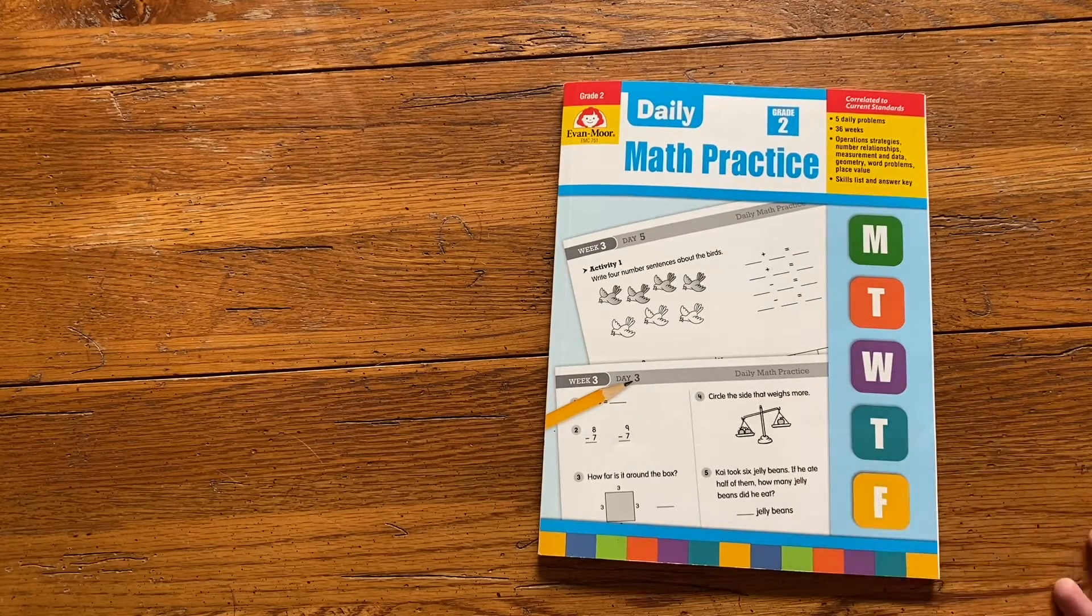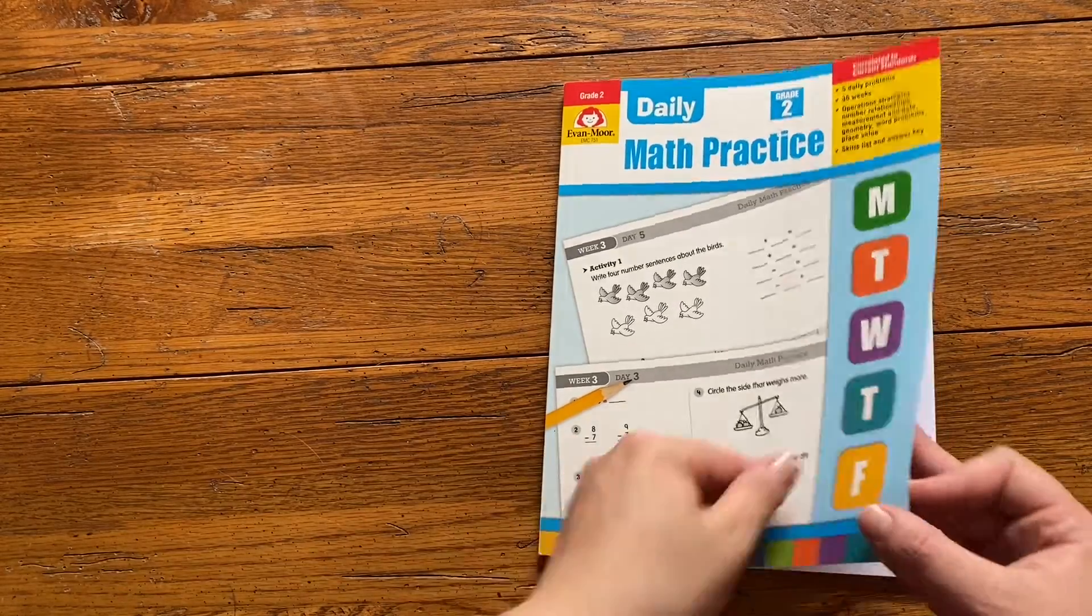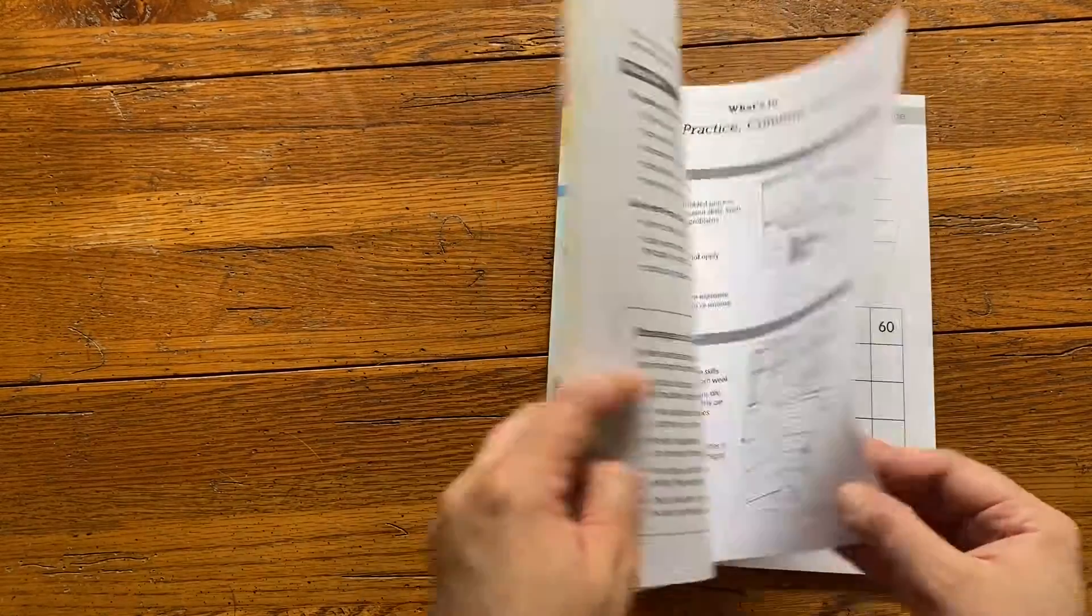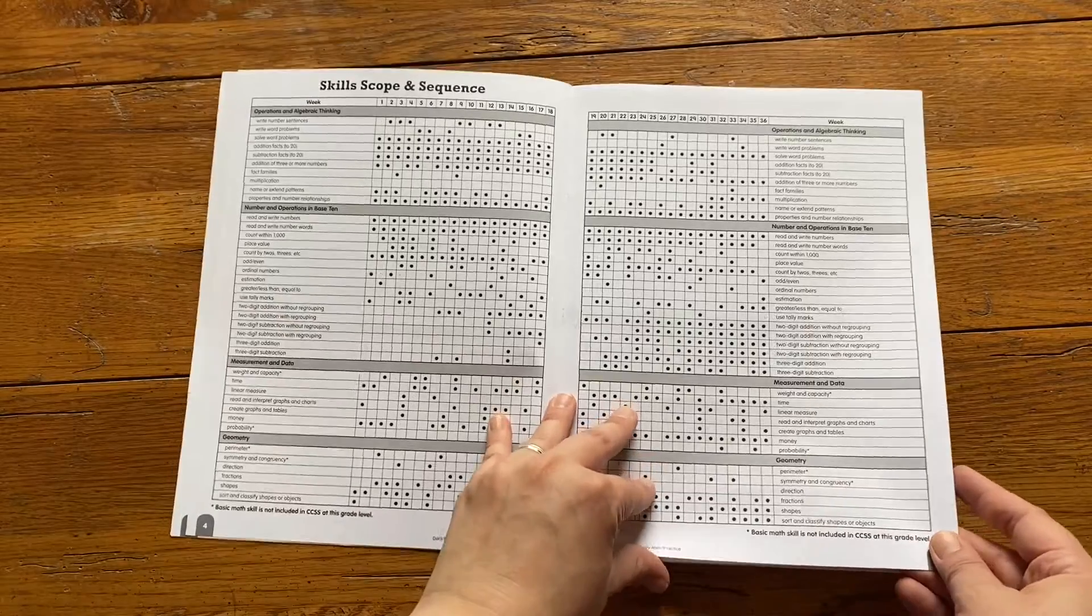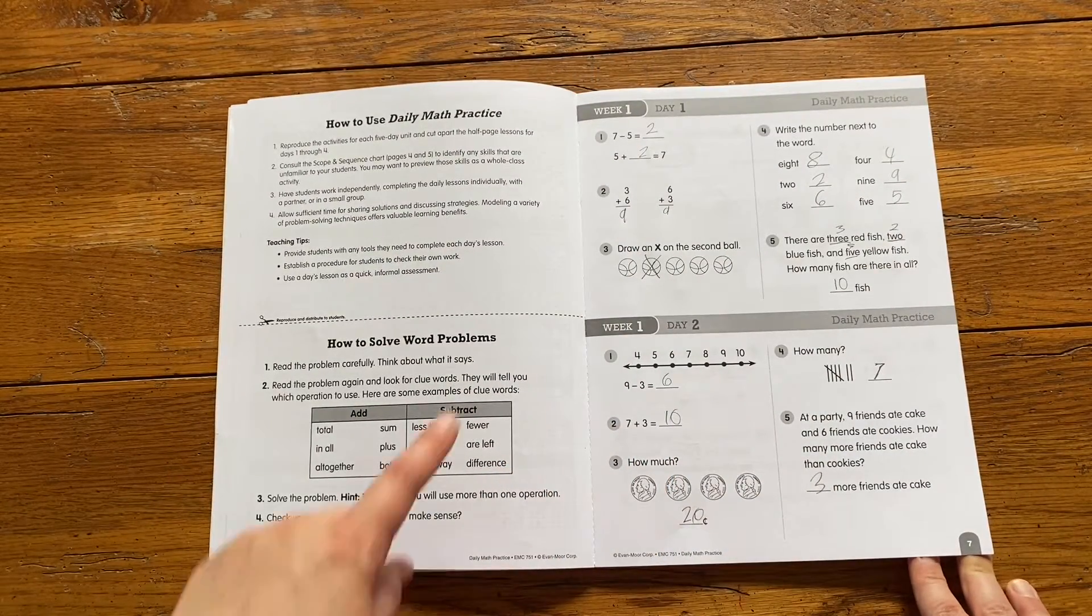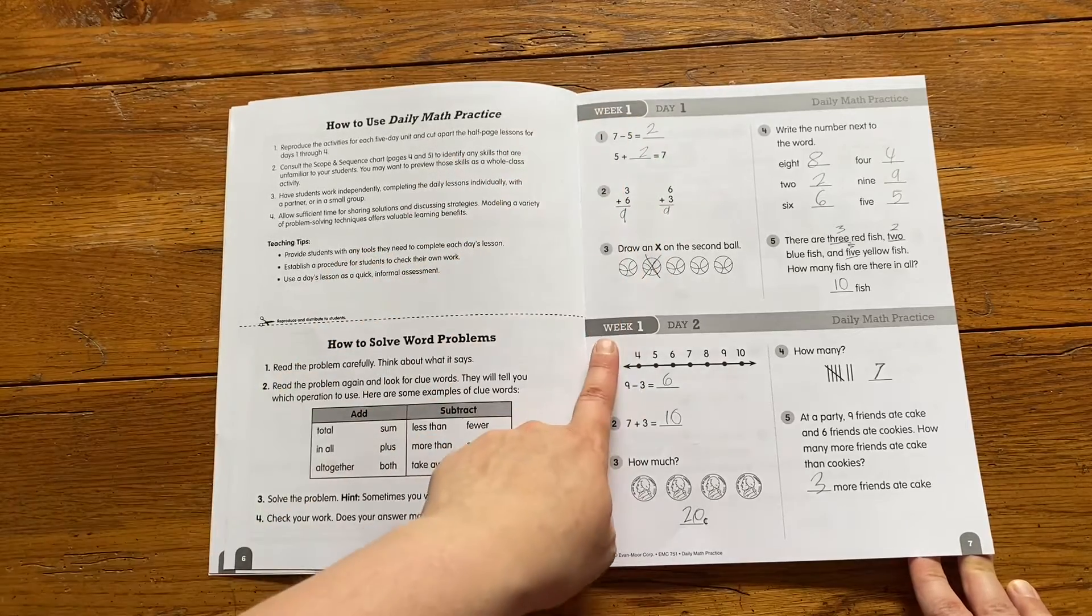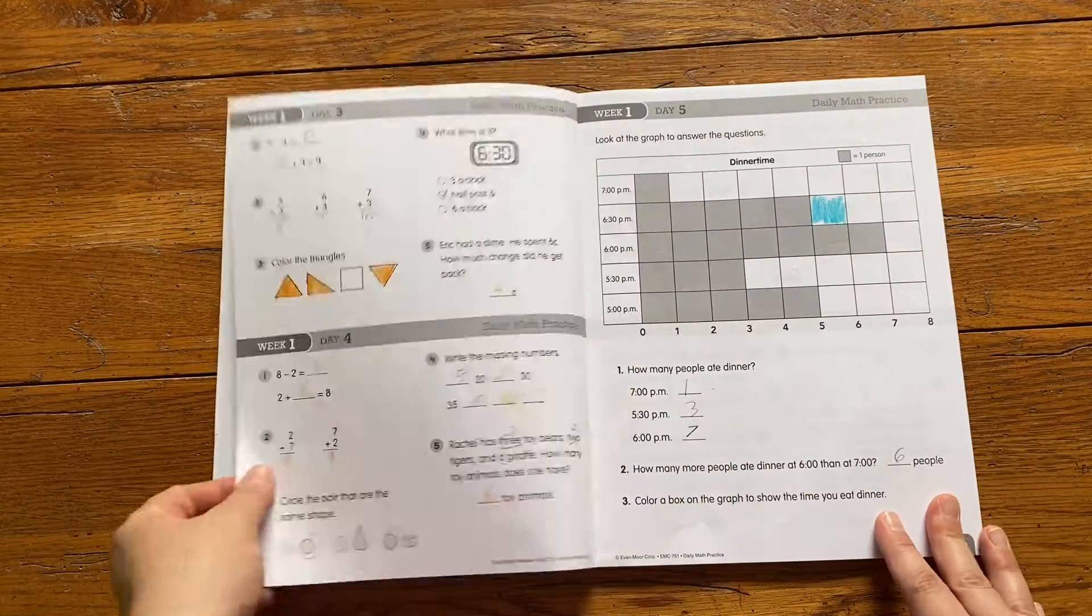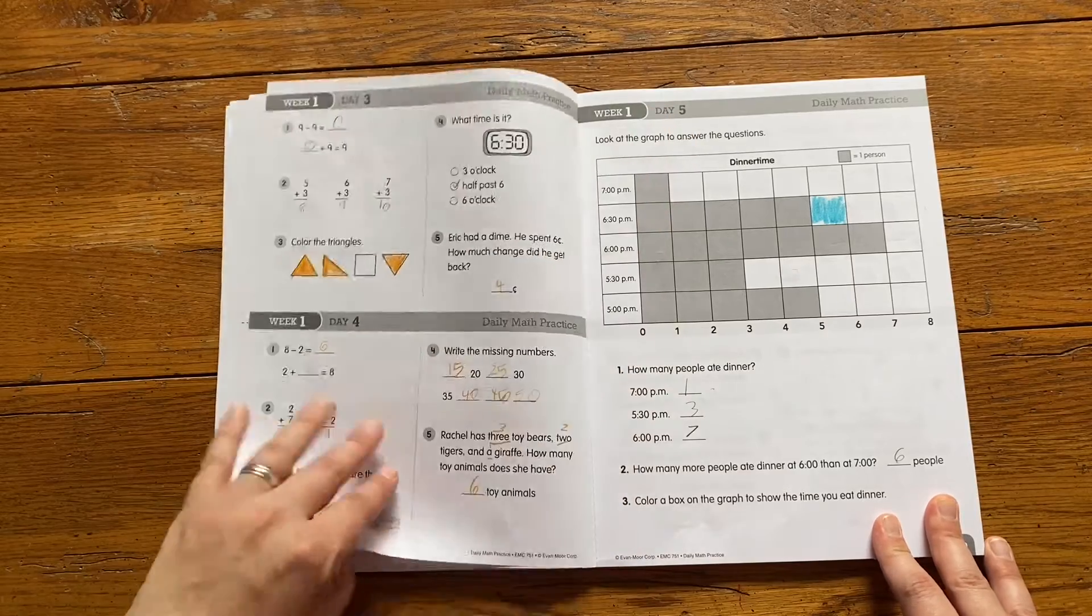So anyway, I'm just going to flip through it really quick so you can see what it looks like and kind of what it contains. There's your scope and sequence if you want to look at that. But basically it's broken up into week 1 day 1, week 1 day 2, week 1 day 3, day 4, and day 5.